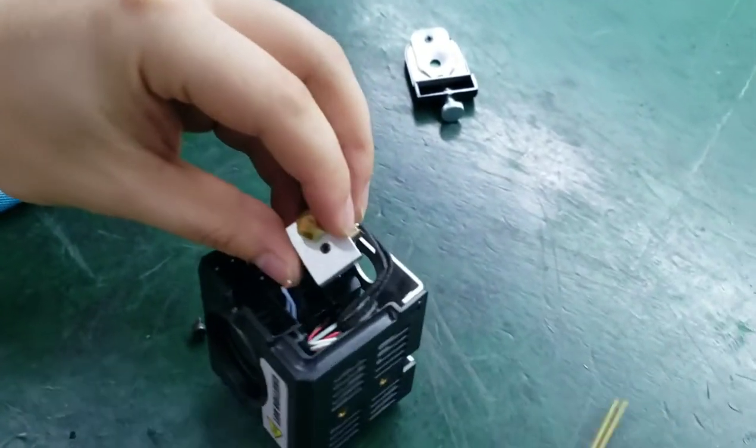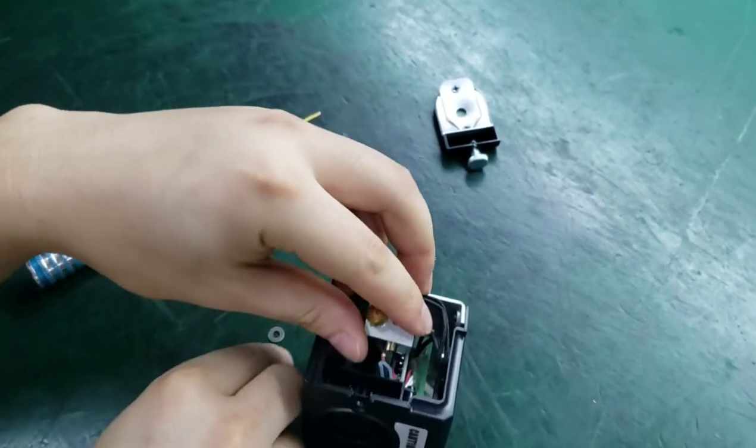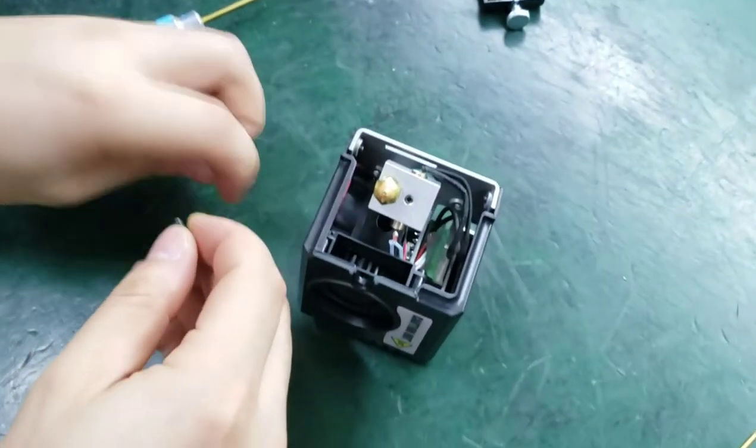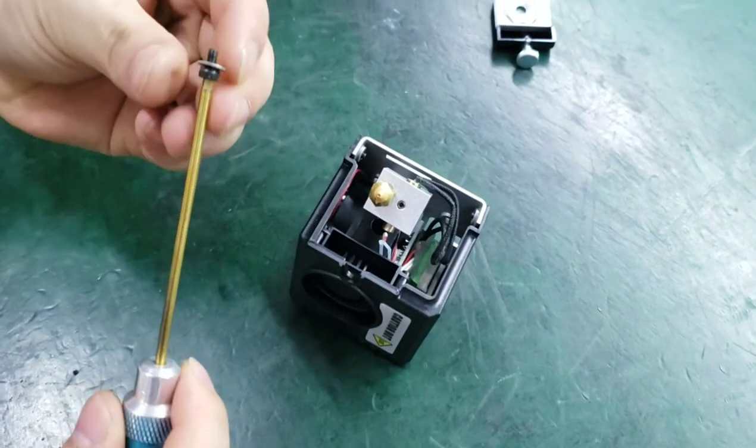Alright. So you insert the heating tube and tighten the locking bolt. And use the bolt to lock the thermistor.